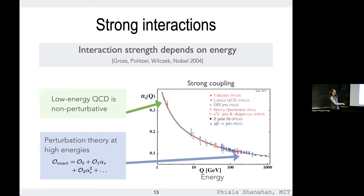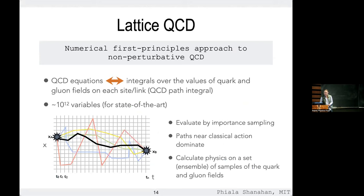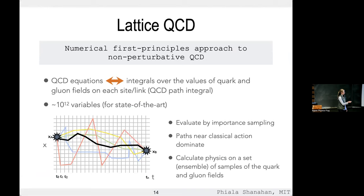This brings us to lattice QCD — the only known systematically improvable approach to studying strong interactions in the non-perturbative regime. You take the theory, discretize it onto a four-dimensional spacetime lattice or grid, and solve the theory numerically. The quantum field theory equations become integrals over all degrees of freedom in this very high-dimensional discretized space — on state-of-the-art calculations, something like 10^9 to 10^12 variables — essentially a numerical integration to compute expectation values of observables.